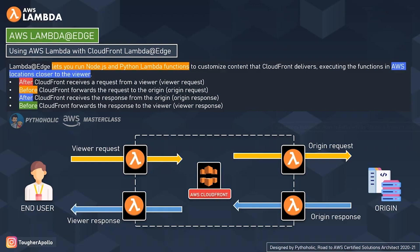The fourth trigger point is viewer response — this is an outgoing response. It triggers the Lambda code before CloudFront forwards the response to the viewer. The function executes regardless of whether the file is already in the CloudFront cache. The function does not execute when: the origin returns an HTTP status code of 400 or higher, a custom error page is returned, the response is generated from a function triggered by a viewer request event.